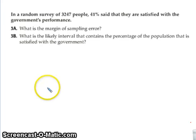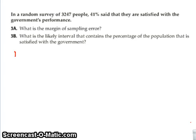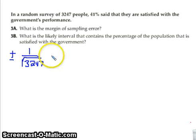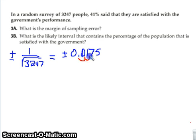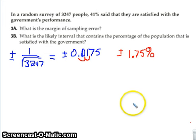Here's another one: find the margin of error with 3,247 people. It's going to be plus or minus one divided by the square root of 3,247. That equals 0.0175 if we round — thank you Carrie. To change that to a percentage, move the decimal over two places, so it's plus or minus 1.75%. The actual margin of sampling error would be represented as plus or minus 1.75%.